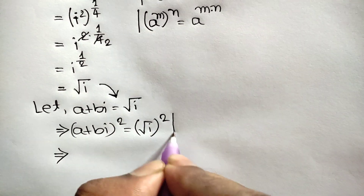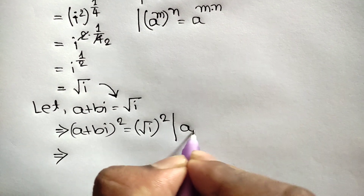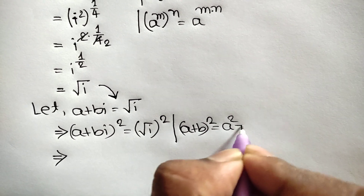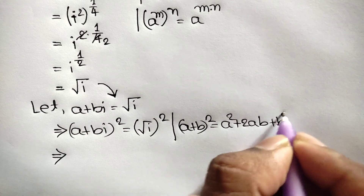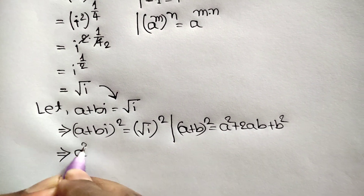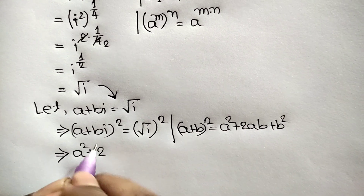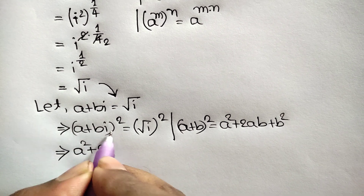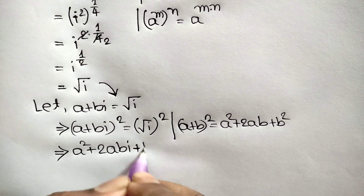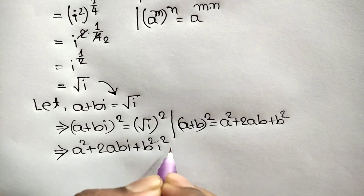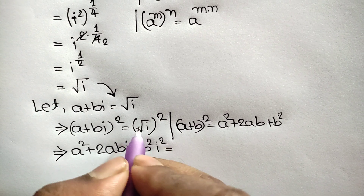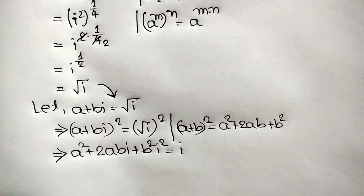We know that a plus b whole squared equals a squared plus two ab plus b squared. Applying this rule, we get a squared plus two times a times bi, so two abi, plus b squared i squared. The square root and square cancel on the right, leaving just i.